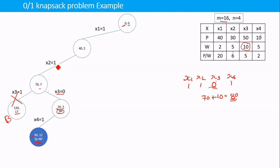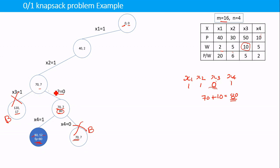We set the current best profit to 80. We had x3=0 and x2=1, so next we try x2=0: if we also set x4=0, profit will be only 70, which is less than 80. There is no need to explore that node further, so we kill it and backtrack. We tried both possibilities for x3 (x3=1 and x3=0), so we backtrack from there too. We haven't yet tried x2=0, so we set x2=0 and use the bounding function to check if we can beat the current best profit.